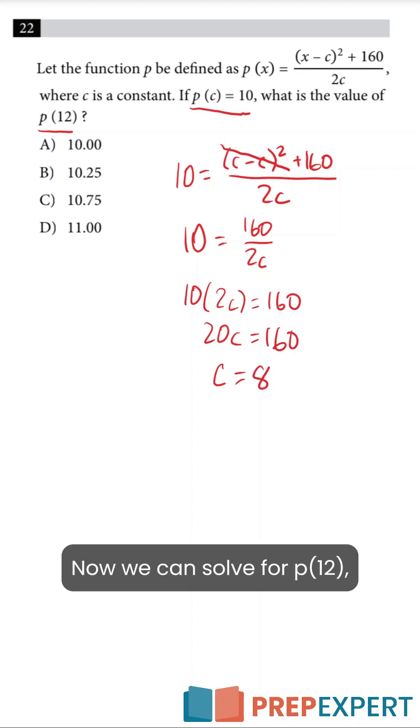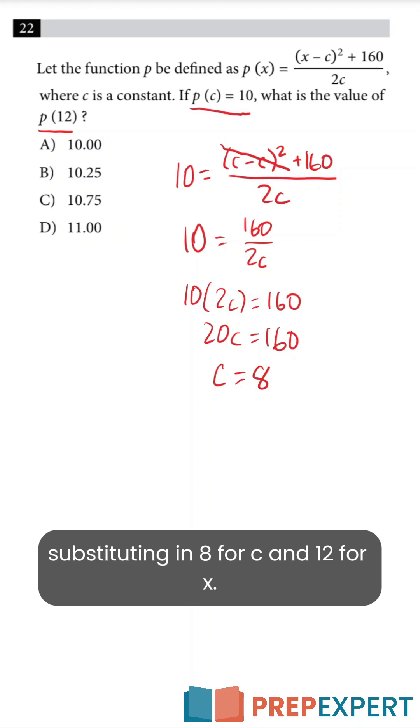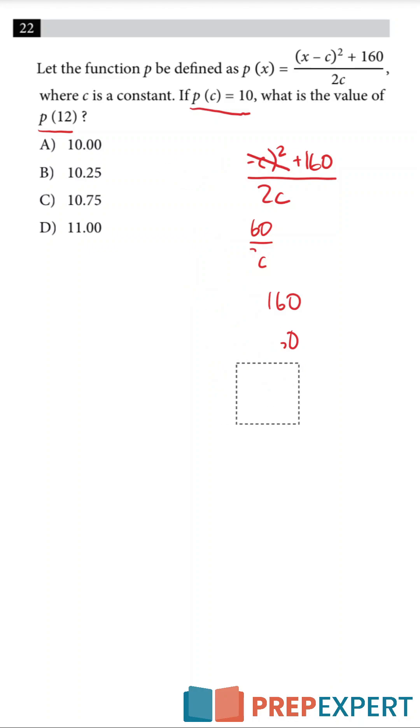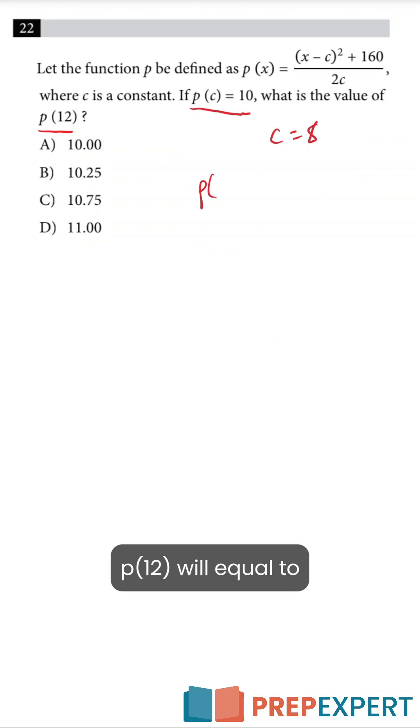Now we can solve for p of 12, substituting in 8 for c and 12 for x. Let's write that equation. p of 12 will equal 12 minus 8 squared plus 160 over 2 times 8.